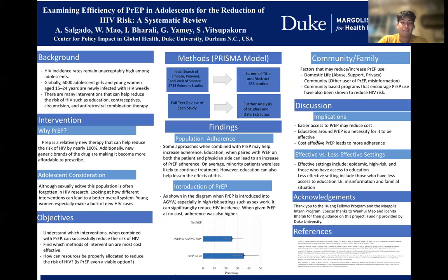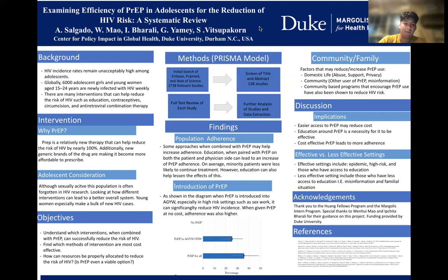Some implications: easier access to PrEP may reduce the cost, and cost-effective PrEP leads to more adherence. Education around PrEP is a necessity for it to be effective. Effective settings included epidemic contexts — the more people needed it, the more cost-effective it became — high-risk settings, and those with less access but more access to education. Being aware of how to take PrEP was extremely beneficial to adherence. Less effective settings included misinformation and familial situations such as domestic abuse. Thank you so much for listening to my presentation.